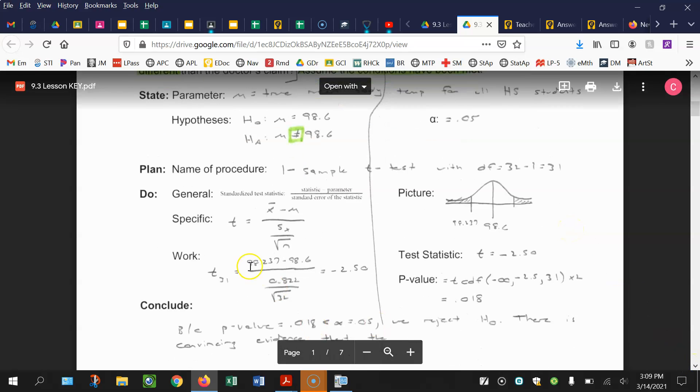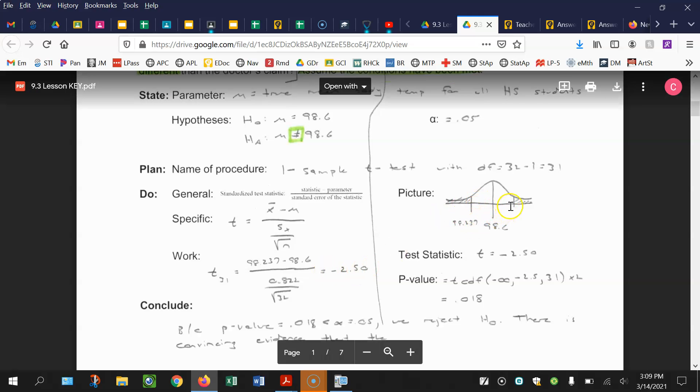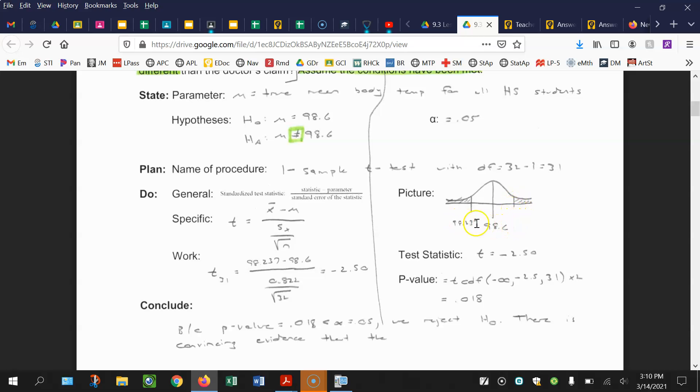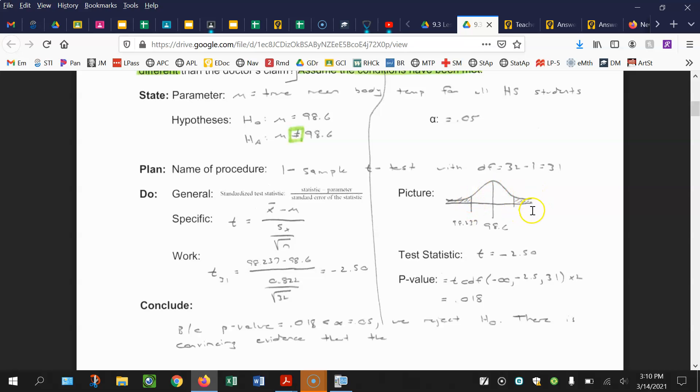On to the do step. To get our test statistic, we take that statistic minus the parameter divided by the standard error. So our sample mean minus our parameter, the claim, divided by our standard error. This is not called standard deviation because this is the sample standard deviation we're estimating, divided by the square root of the sample size. Our test statistic with 31 degrees of freedom is negative 2.5. To find my p-value, TCDF from negative infinity to the standardized score of negative 2.5, degrees of freedom 31. I'm going to double that area to get the p-value because this is a two-tailed test. The p-value is 0.018.